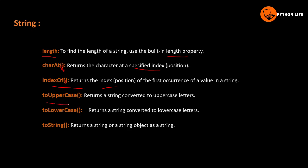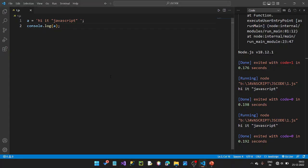Then, uppercase and lowercase: uppercase into lowercase, lowercase into uppercase. toString returns a string or a string object as a string. We can use the type conversion to string. So let's take a look.